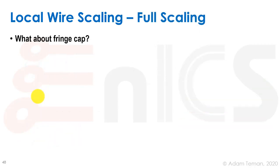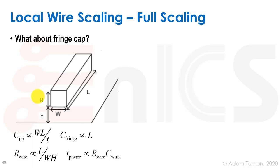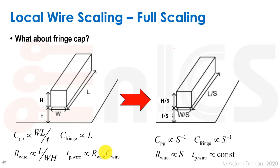We also didn't account for fringe capacitance, which is pretty important, so let's add that to our model. The parallel plate capacitance is proportional to w·l/t, and the fringe capacitance is proportional to the length l (a constant multiplied by the two edges). The wire resistance is l/(w·h). When we make everything smaller by s, the parallel plate capacitance goes down by s, the fringe capacitance goes down by s, resistance goes up by s, and the delay stays constant — still not good, as it's linearly larger than transistor delay.